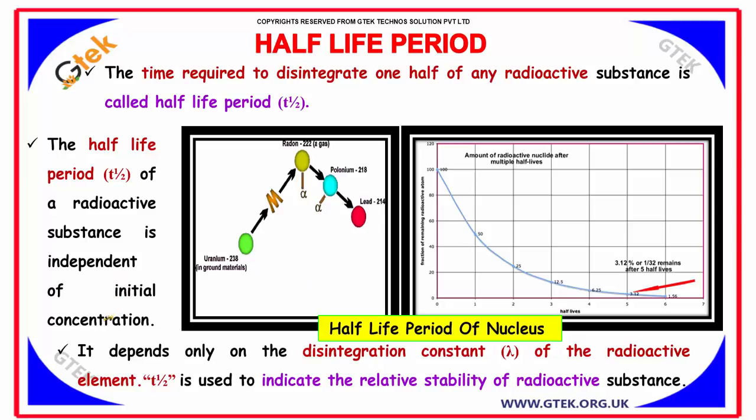It depends only on the disintegration constant lambda of the radioactive element. T half is used to indicate the relative stability of radioactive substances.